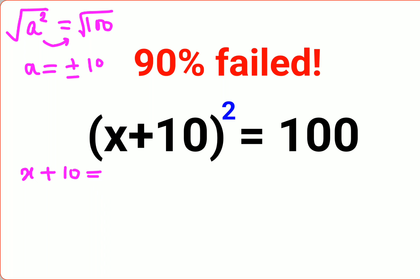Here we'll get x plus 10 equals plus 10, or x plus 10 equals minus 10. Now in order to find the value of x, you will subtract both sides by 10.